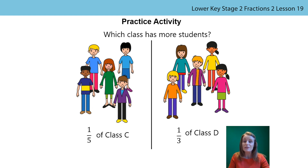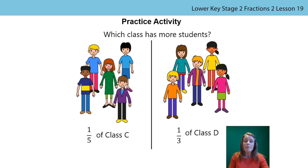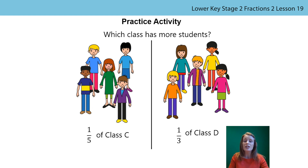The first thing we're going to do is review that practice activity. Yesterday's lesson was showing us how we can use one part of a fraction to make a whole, and we were comparing different wholes. We used the same amount but a different fraction. So look at this question: Class C has one fifth, Class D has one third, and we asked which class had more students. We started by looking at what was the same and what was different. Can you see the amount of students is the same, but the fraction is different? Let's see how I worked it out.